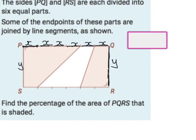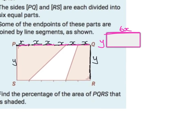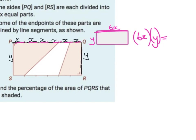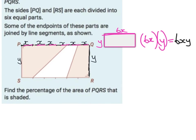The total area of the rectangle is length times width: 6x times y, giving 6xy. Now I need to find the area of the shaded region. Looking at the first shaded shape, it's not a standard shape on its own, but I can split it into a rectangle and a right-angle triangle.